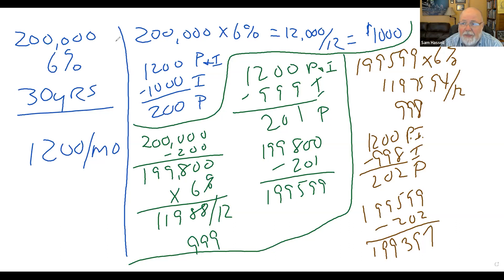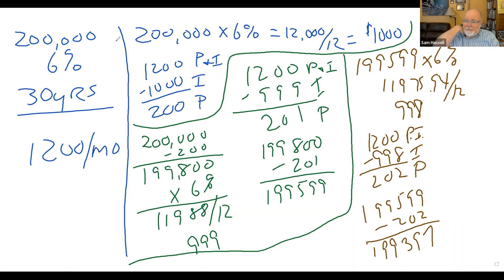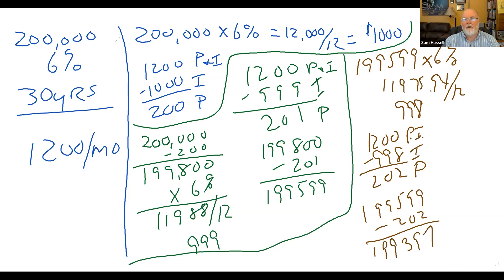If you're paying $1,000 a month and you're paying 6% on whatever number you figure out — that's your interest. The balance is principal. It's principal and interest subtracted from what you got. Always simple interest.